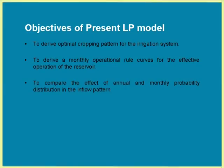Since I have to cover many things, I will just quickly go through this. The same LP and FLP model which I explained — we have also modeled it as a chance constrained linear programming model. I will quickly go through that and show you only the result. Here, the objective function is to derive the same optimal cropping pattern for the large-scale irrigation system, and very importantly, to compare the effect of annual and monthly probability distribution of inflow pattern.